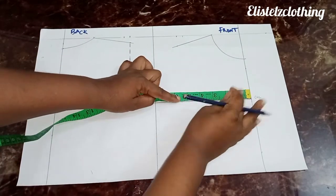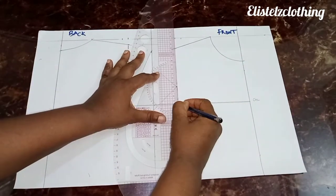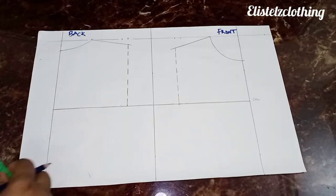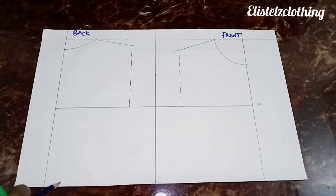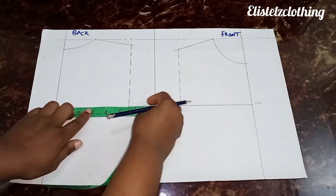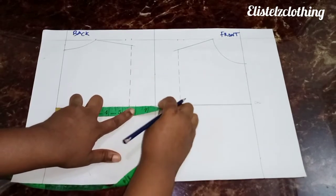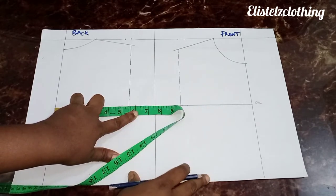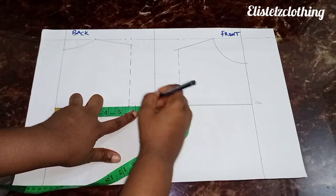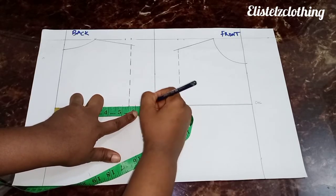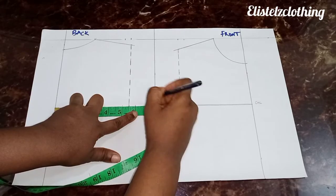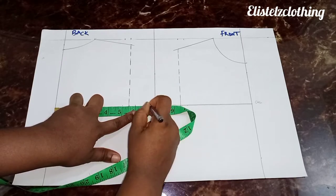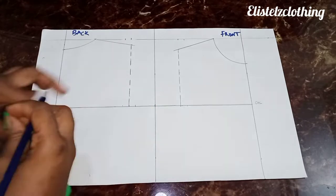We mark the same on the front — her shoulder is 10, 10 over 2 is 5, plus 0.5. Connect that to the shoulder slope. On the chest line we mark her chest round: chest round is 24, 24 over 4 is 6, adding 1.5 sewing allowance gives us 7.5. We repeat the same on the front as well.